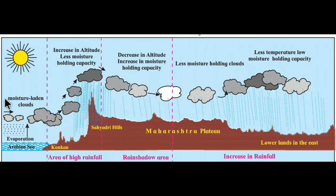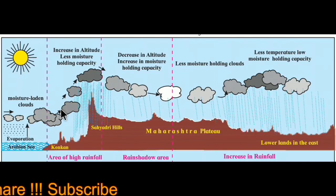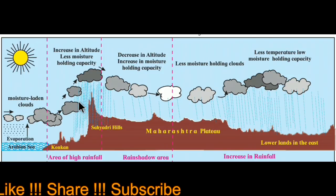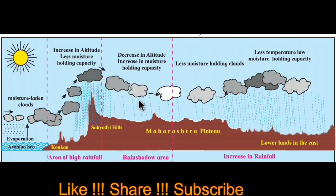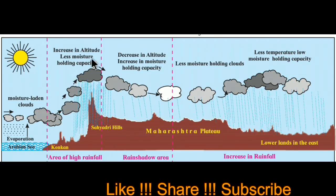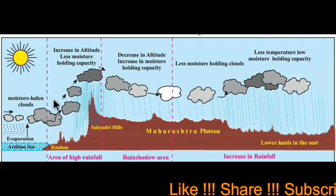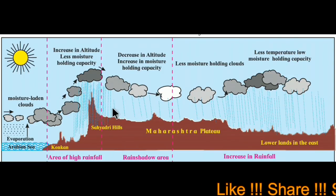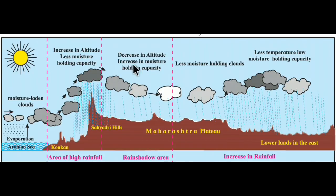The clouds inside the monsoon winds carry moisture. Because of the barrier, the clouds rise. As they rise higher, the moisture holding capacity decreases. So these clouds release their moisture, and this windward region gets more rainfall. When the clouds cross the mountain and altitude decreases, the moisture holding capacity increases, so rainfall decreases. This is the rain shadow area — also called the leeward side — where rainfall is less.